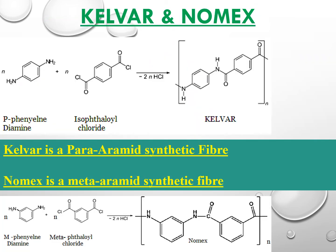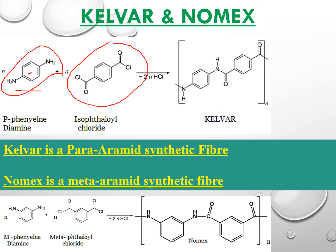Kevlar is prepared using para-phenylene diamine — there are two amine groups on the benzene ring in the para position, each opposite to the other — along with iso-terephthaloyl chloride, where the acyl groups are also in the para position. The criteria for polymerization require each monomer to have two functional groups: two NH₂ groups on one monomer and two acyl groups on the other.